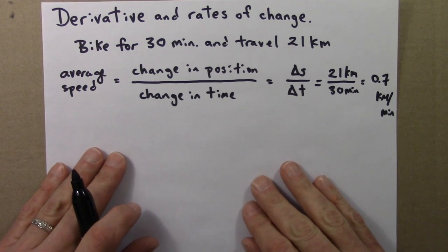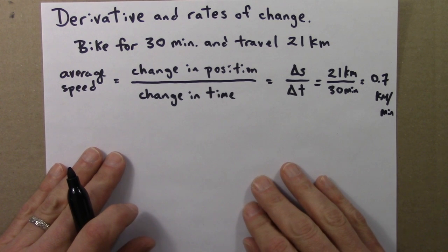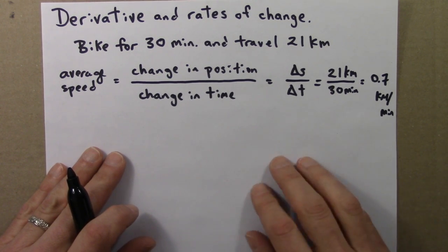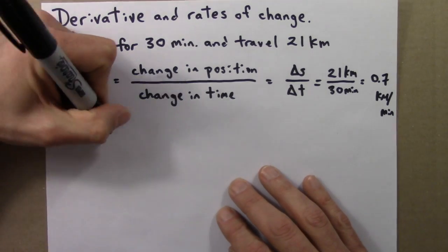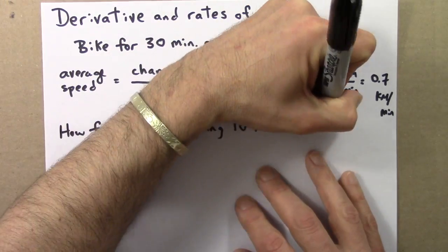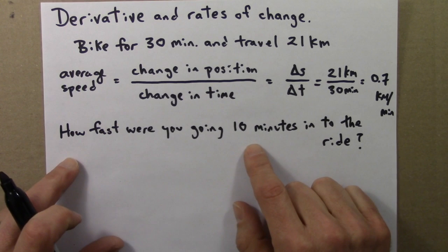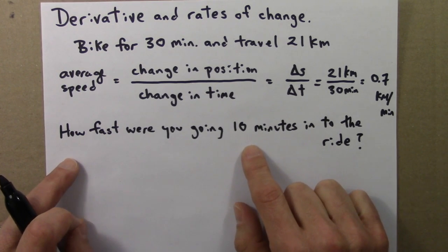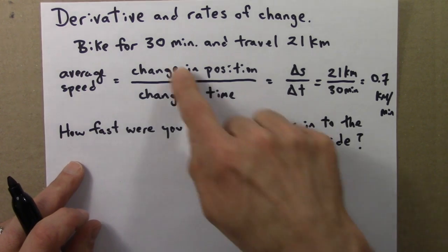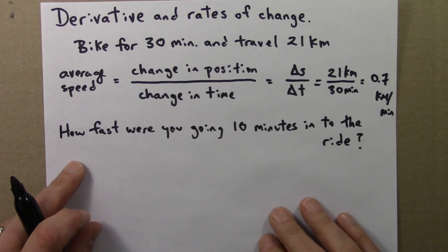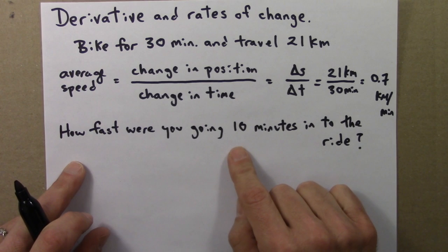But then, you might ask another question. How fast were you going, say, 10 minutes, at exactly 10 minutes into your ride? So, this is a different sort of question. It's asking your speed, how fast you were going, at a particular instant, not over an entire 30 minutes. So, this is a harder and more subtle question.